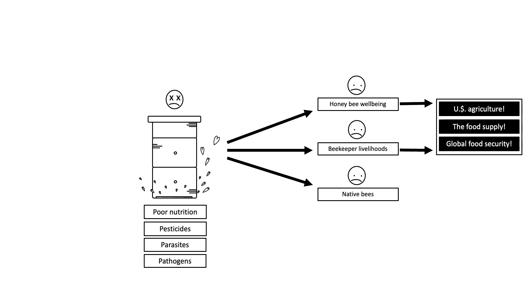This is the narrative that shapes most of the grants we apply for, the articles we write, and the actions we take to support honeybee health. It's clear-cut. It's widely agreed upon. It's also missing something big. The framing we use to discuss honeybee health highlights the stressors that drive colony loss, but it doesn't talk about where those stressors come from.